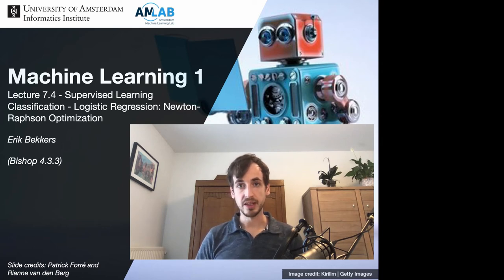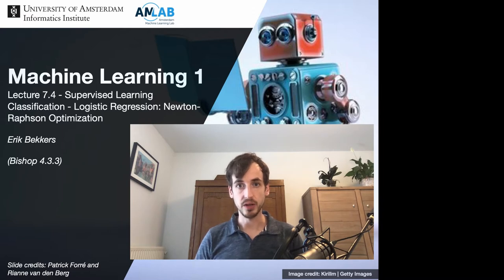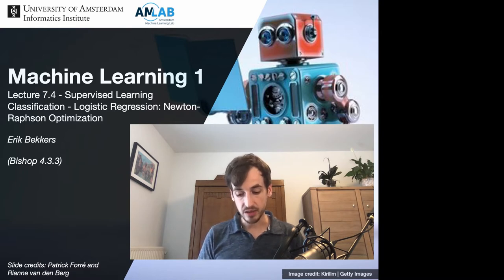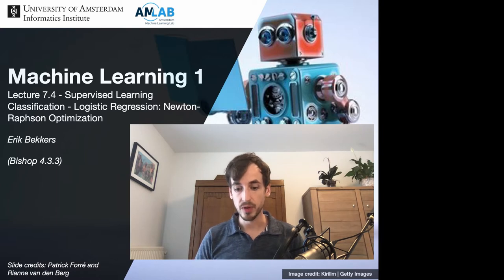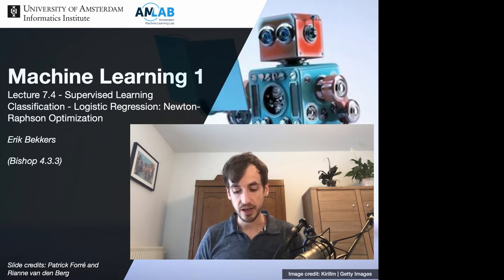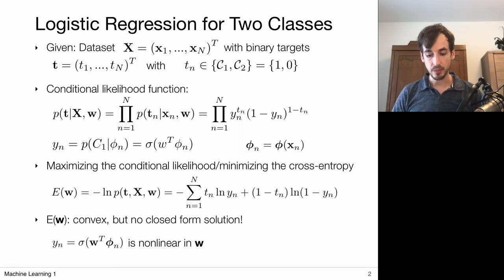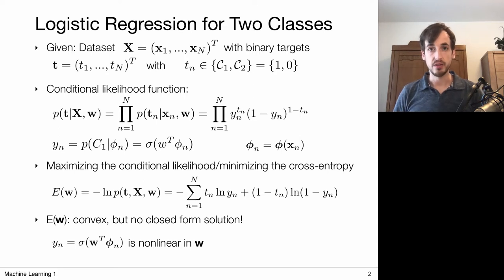In this video I'm going to present a second-order optimization scheme for finding logistic regression models. This scheme will be called Newton-Raphson optimization. Along the way of deriving this second-order optimization scheme, I will show that the logistic regression error function is actually a convex function, and hence it only has one globally optimal solution.